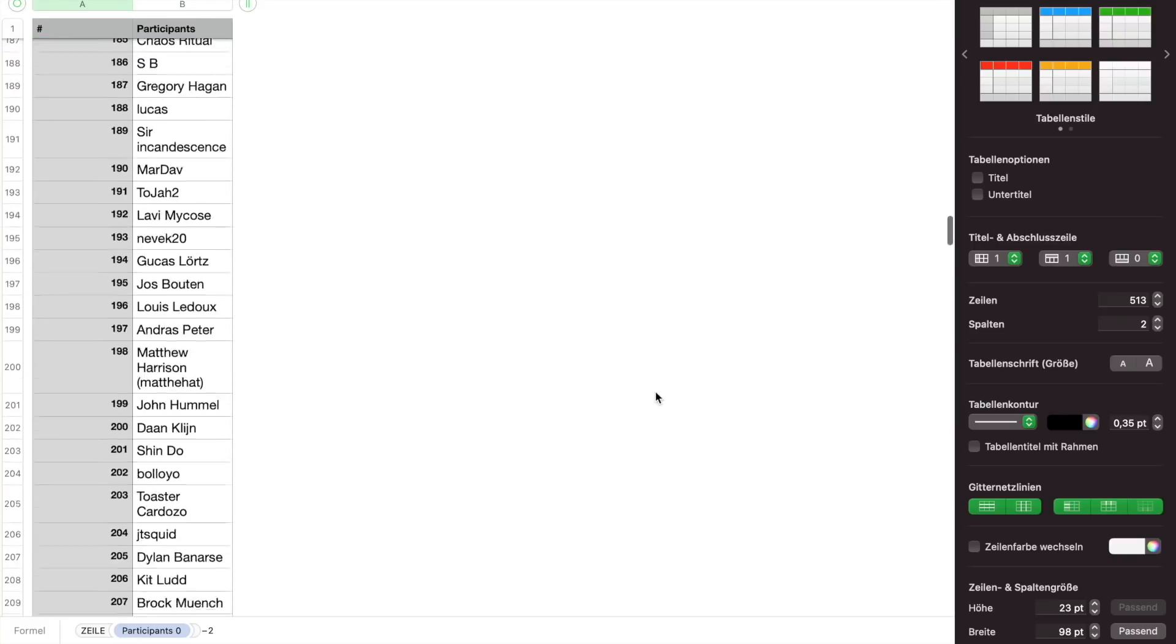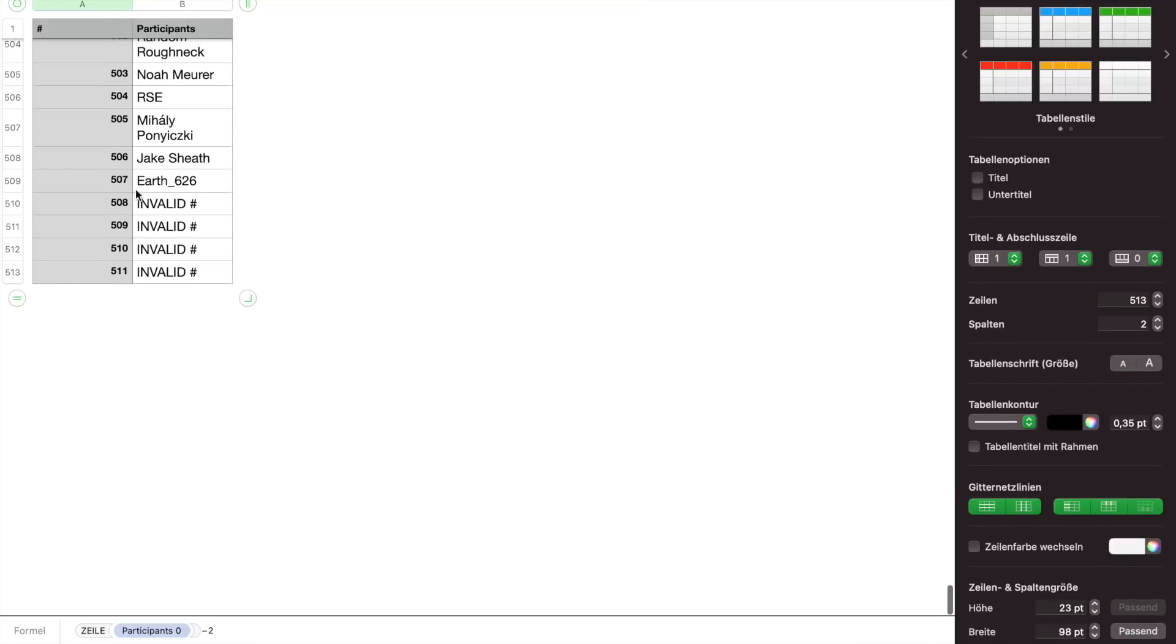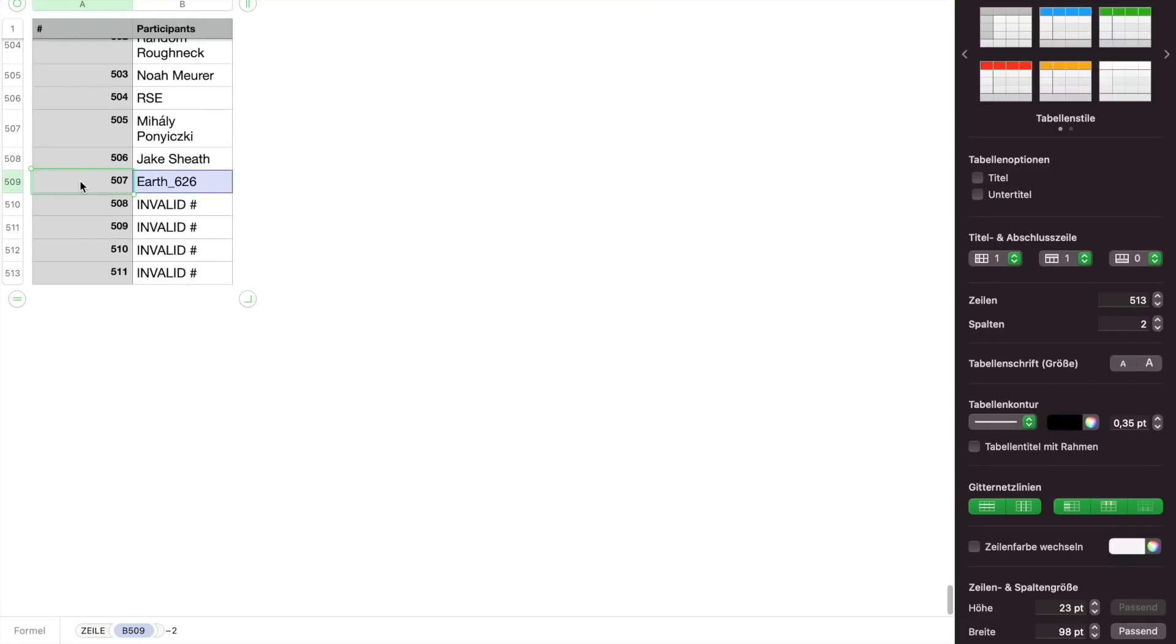As I said before, our list ends at number 507, so I've marked the last four entries as invalid. If those come up, we'll resample. But if any of the others come up, then we'll have our winners.